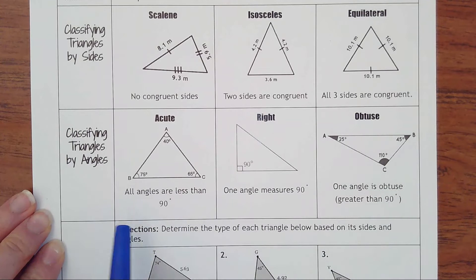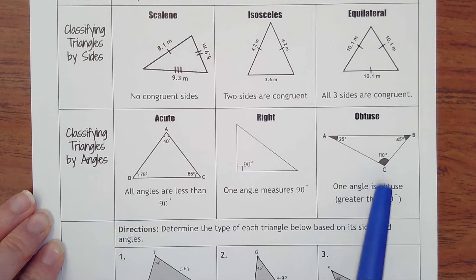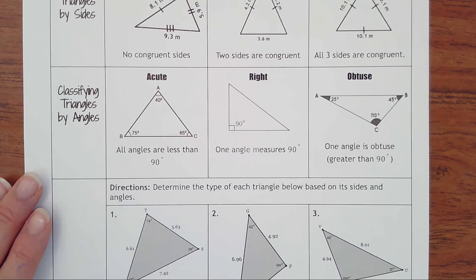So really, you can kind of look at just what the biggest angle is out of the three. If that's acute, then it's an acute triangle. If it's 90, then it's right. And if it is an obtuse angle, then it's an obtuse triangle.